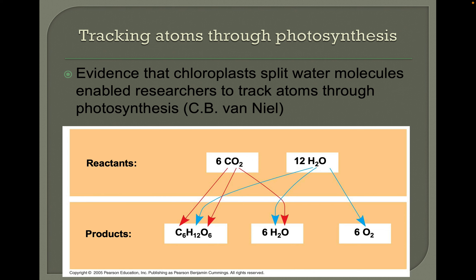Tracking atoms through photosynthesis: there's evidence that chloroplasts split water molecules, enabling researchers to track the atoms through the process. The carbon from CO₂ ends up in the glucose molecule; there's also oxygen in the CO₂, and some of that ends up on glucose while some ends up in water. The hydrogen from water goes to the glucose and to making more water, and it's the oxygen from water that produces the oxygen gas.